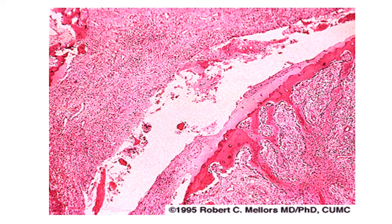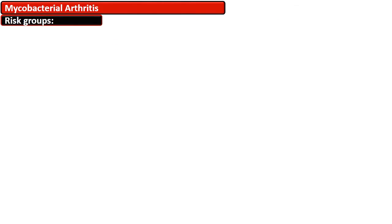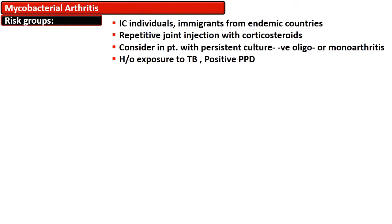The histopathologic appearance of septic arthritis shows the presence of pus, infiltration by chronic inflammatory cells, and granulation tissue formation. For mycobacterial arthritis, risk groups include immunocompromised individuals, immigrants from endemic countries, and those receiving repetitive joint corticosteroid injections. It should be considered in patients with persistent culture-negative oligo- or monoarthritis.